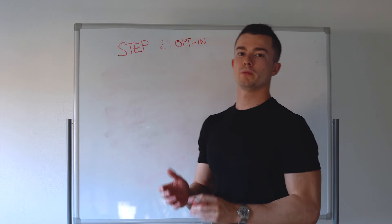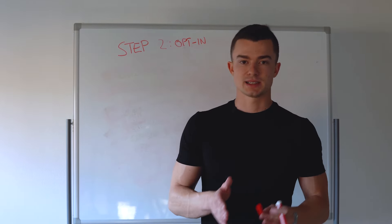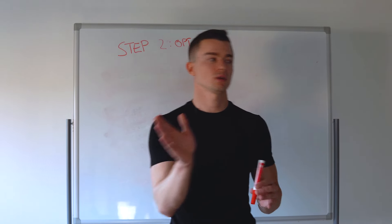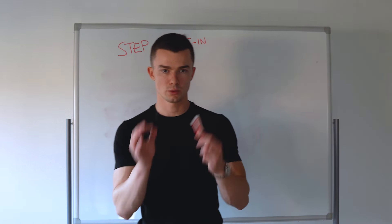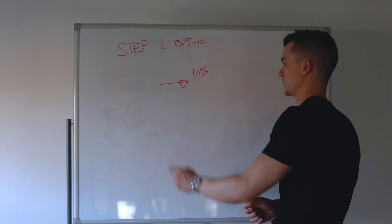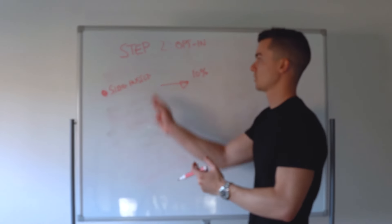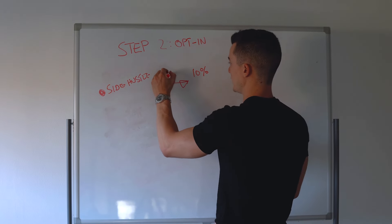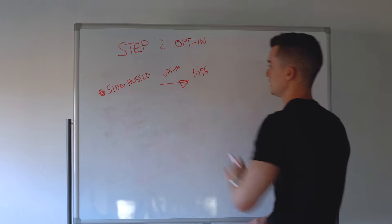Step two is maximizing what happens after people click the ad. With a VSL funnel, you have the ad, the opt-in page, the VSL, then the call. If your opt-in page converts at 10% — that's below the KPI. You should be shooting for 20 to 40% opt-in rate. If it's only 10%, you're burning a lot of money, potentially generating two to three times fewer leads than you could. Before testing new ad variations, fix the opt-in page first.